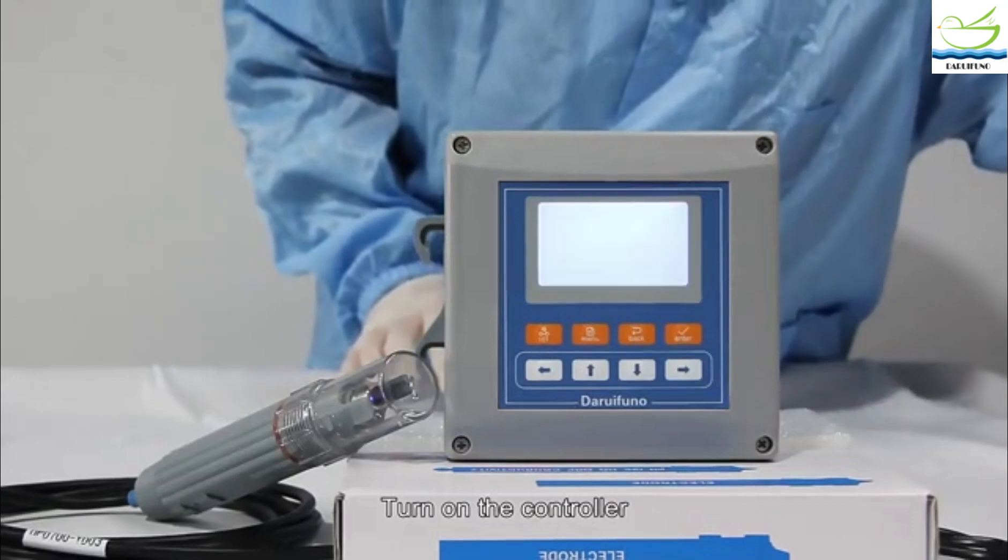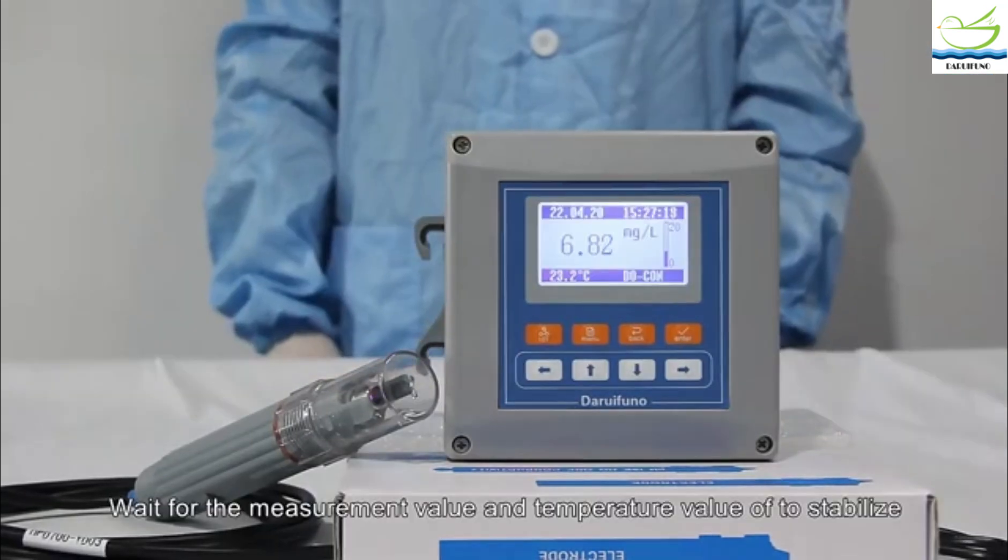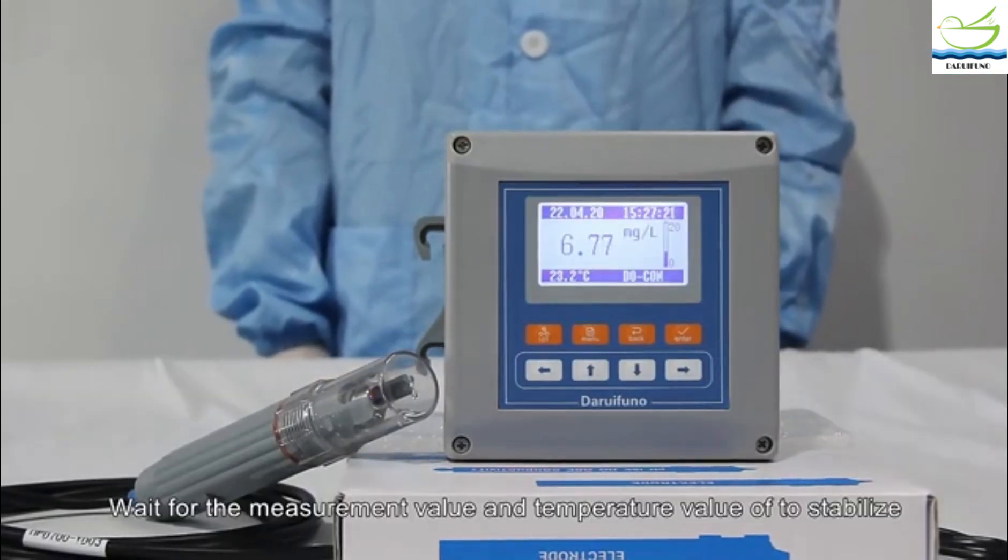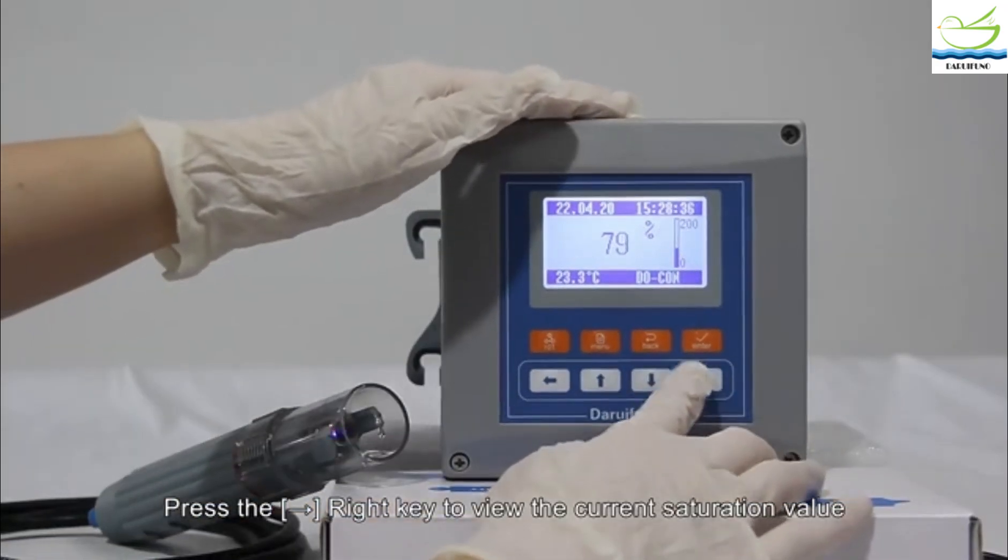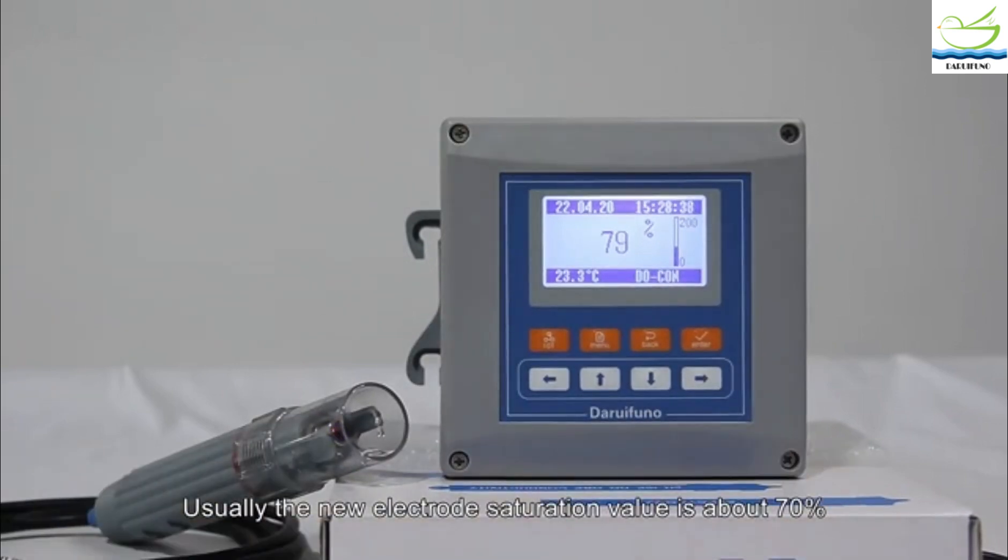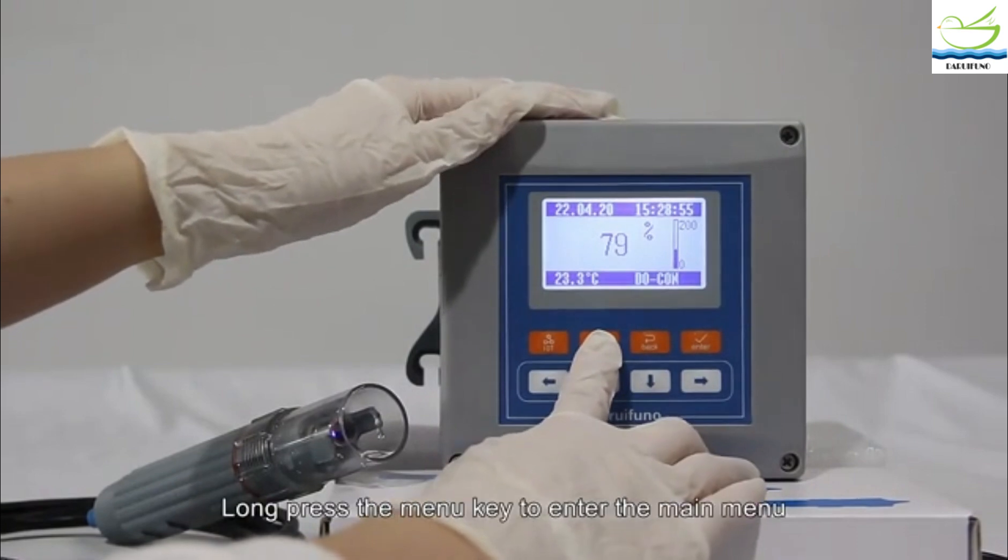Turn on the controller and wait for the measurement value and temperature value to stabilize. Press the right key to view the current saturation value. Usually the new electrode saturation value is about 70%. Let's start the calibration. Long press the menu key to enter the main menu.